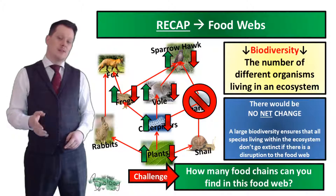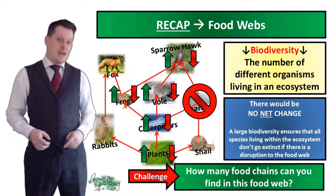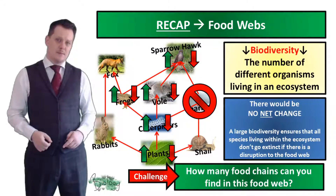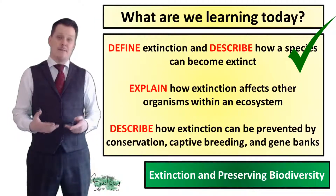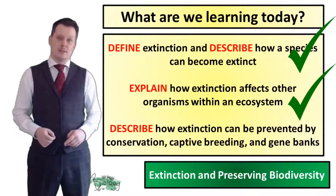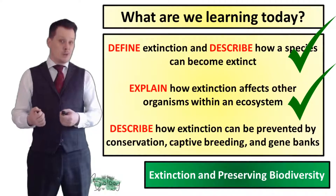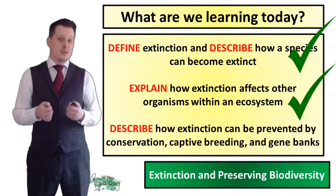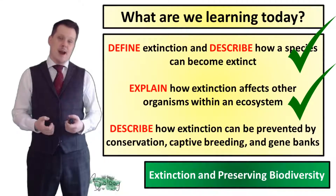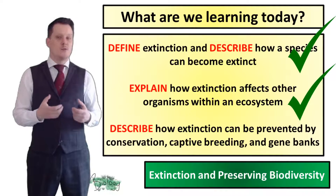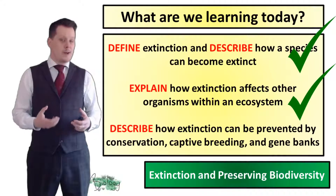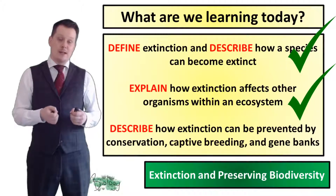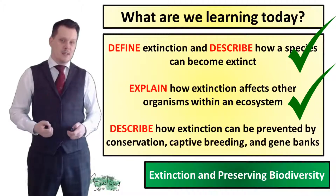How many food chains did you find in this food web? If you're really sure about your answer, I'd like to hear about it down in the comments below. We can now explain how extinction affects other organisms: it had a bigger impact in the food chain because there was less biodiversity, and a much smaller impact in the food web because large biodiversity ensures very little disruption to the rest of the ecosystem.